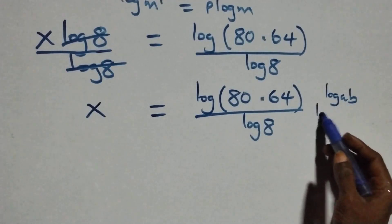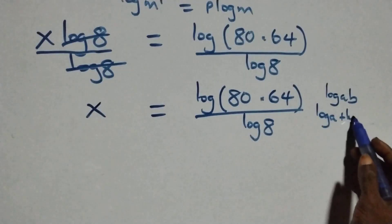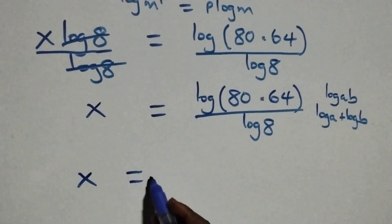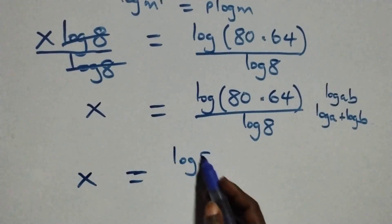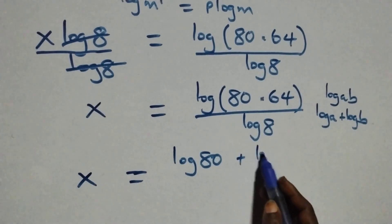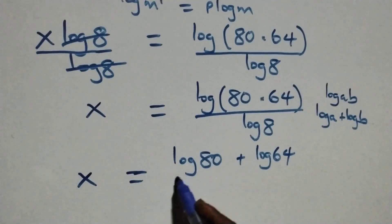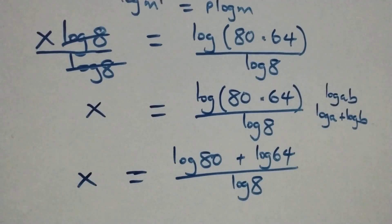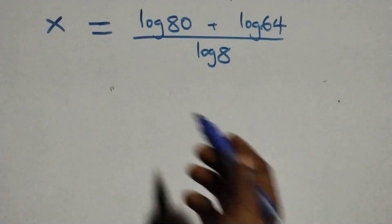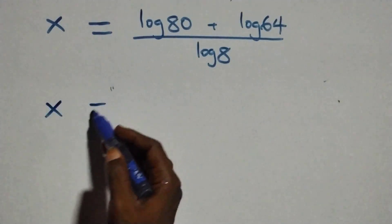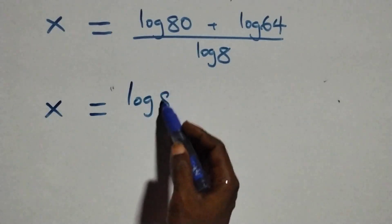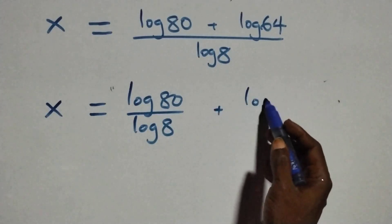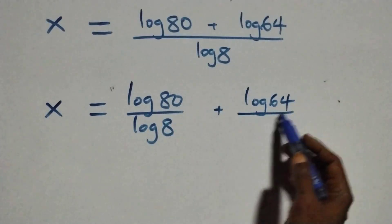This follows the log product rule: when we have log of a times b, this is the same thing as log a plus log b. So we can write this as x equals log 80 plus log 64 over log 8. Then we separate this into two fractions: x equals log 80 over log 8 plus log 64 over log 8.